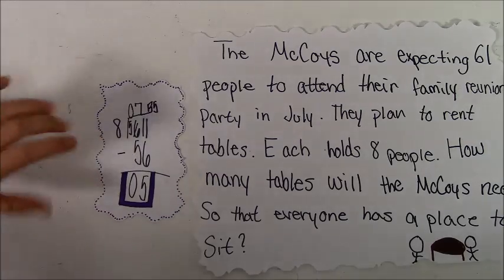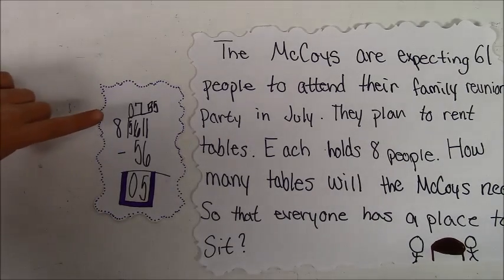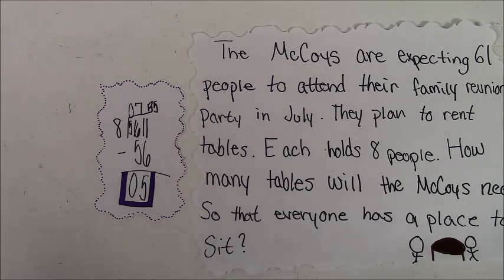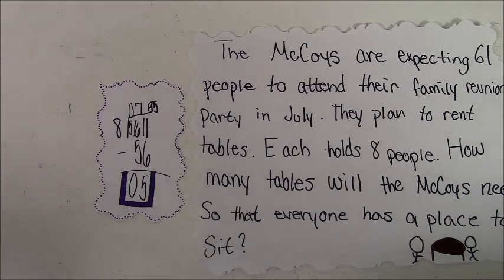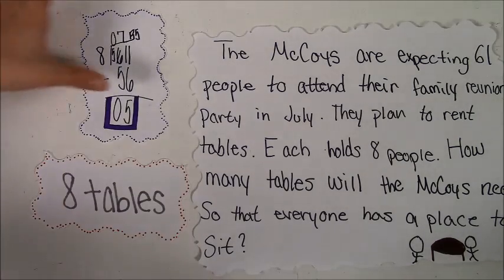This was the problem we used for this word problem. We did 61 divided by eight and got seven remainder five. In this problem, you need enough tables for everybody to sit. So we are going to round to the next number — it's going to be eight tables so that everybody has a place to sit.